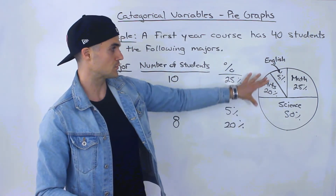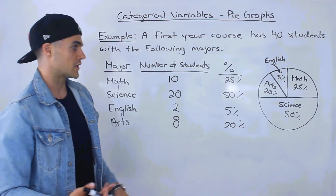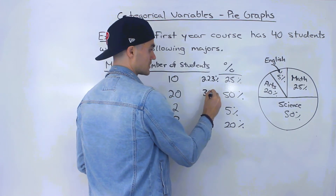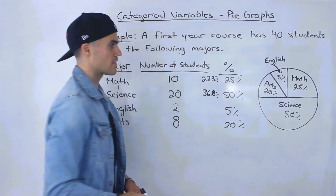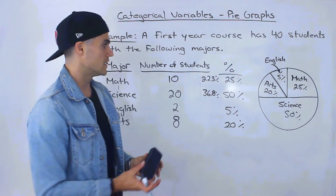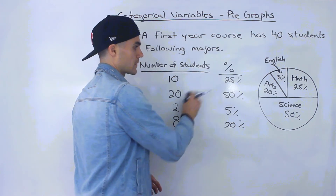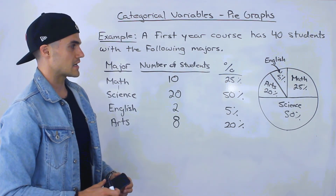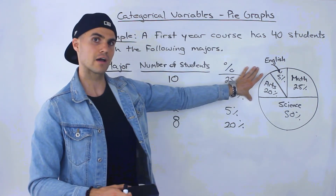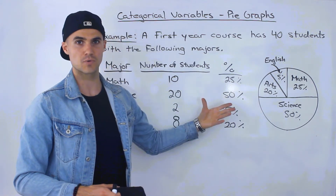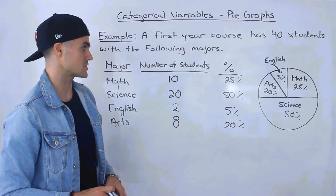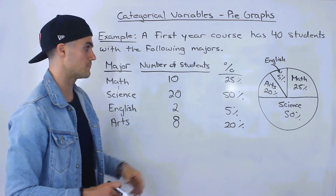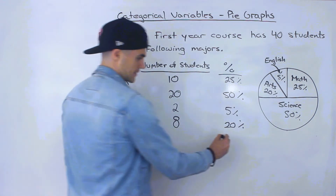These numbers were pretty smooth, so drawing the pie graph by hand wasn't too difficult. But if you had percentages like 22.3% and 36.8%, it gets much more challenging to draw accurately. Pie graphs are usually made with software. You most likely won't have to draw one on your midterm or exam — you'll more likely analyze one — but you never know, so make sure you understand the process and know to calculate percentages first.